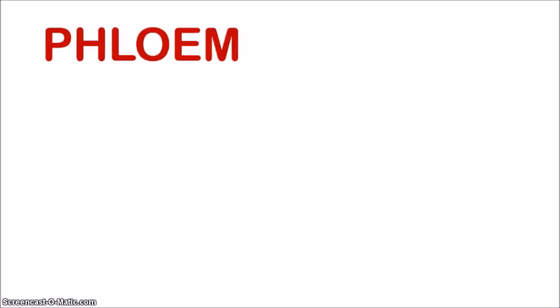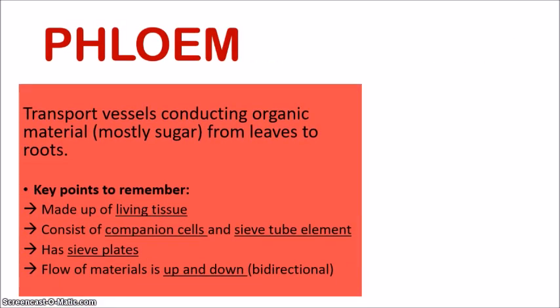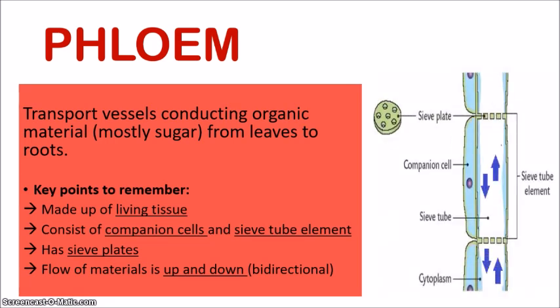Now let's look at the phloem. The phloem consists of the transport vessels conducting organic material — mostly sugars, specifically sucrose. This material would be going from the leaves generally to the roots of the plant. Just remember that in photosynthesis, glucose is manufactured, and that glucose is then converted into sucrose, which needs to be transported from the leaves to the roots.